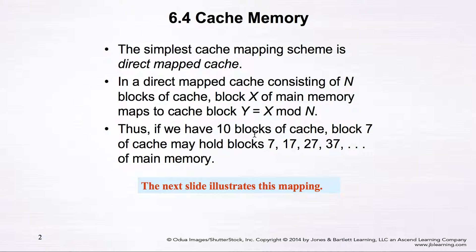For example, if we have 10 blocks of cache, block 7 of the cache may hold blocks 7, 17, 27, 37, and so on, because n is equal to 10. x can be 7, 17, 27, or 37. If you take 7 divided by 10, the remainder equals 7, so y equals 7. If x equals 17, the remainder of 17 divided by 10 is also 7, so y equals 7 again. That's how we map different blocks of memory to a block of cache.